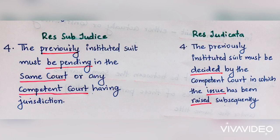Difference number four: in res sub judice, the previously instituted suit must be pending in the same court or any competent court having jurisdiction. In the case of res judicata, the previously instituted suit must have been decided by the competent court in which the issue has been raised subsequently.